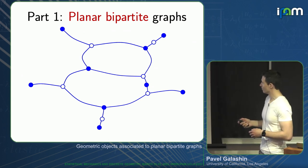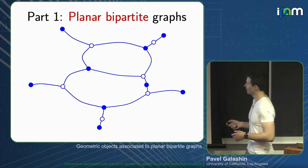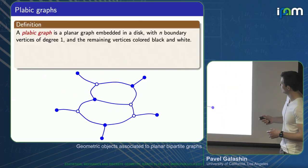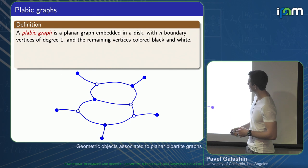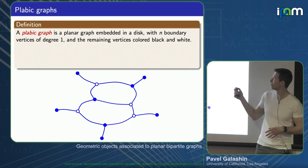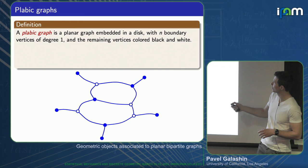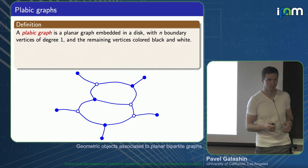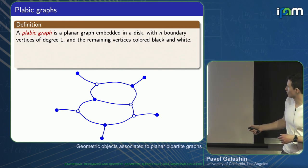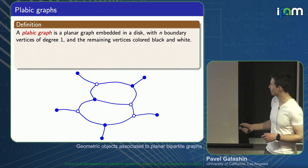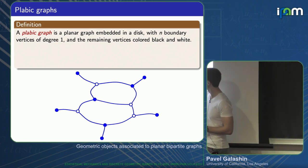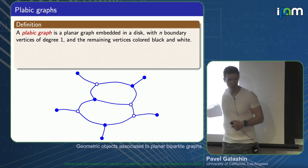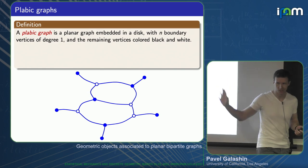Here is a definition — let me pin down exactly what I mean by a plebik graph. For me, it's going to be a graph in a disk, with boundary vertices of degree one. Here are five boundary vertices in this example. Every vertex is colored black and white. I'm going to assume all boundary vertices are black — it doesn't really matter.